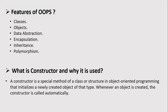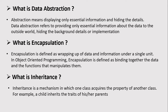What are the features of OOP? Classes, objects, data abstraction, encapsulation, inheritance, and polymorphism — these are the features of OOP. What is a constructor and why is it used? A constructor is a special method of a class or structure in object-oriented programming that initializes a newly created object. Whenever an object is created, the constructor is called automatically.